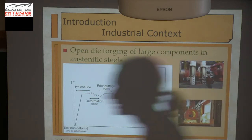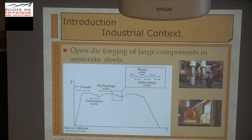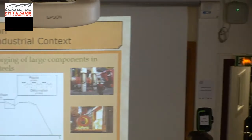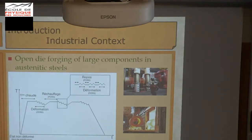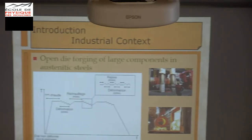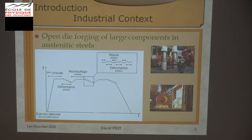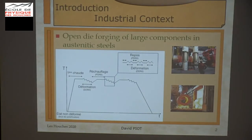First, a small introduction about the industrial context, to have an idea of the motivation of this work. It deals with hot die forging for large-scale components. You have some pictures to have an idea of the size. In the process, you have sequences of numerous heating, cooling, holding, and also a lot of passes of deformation.